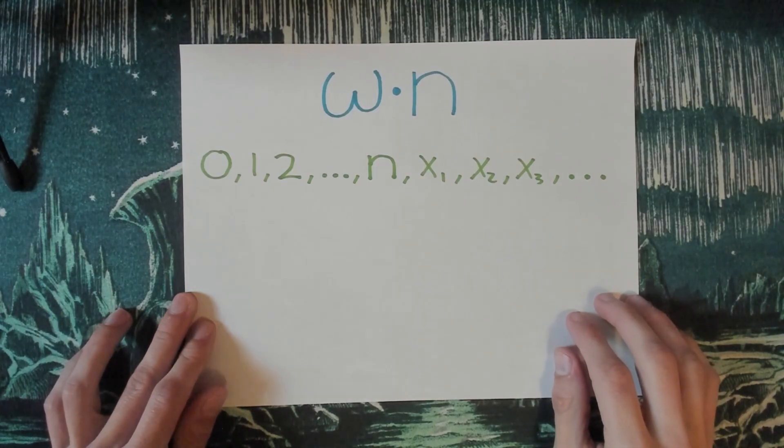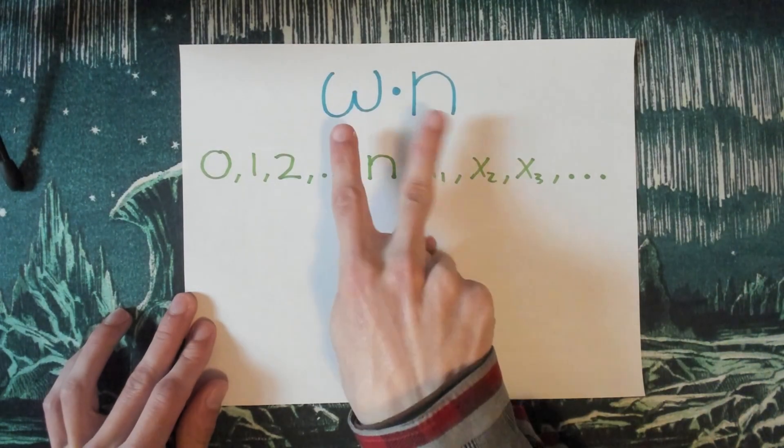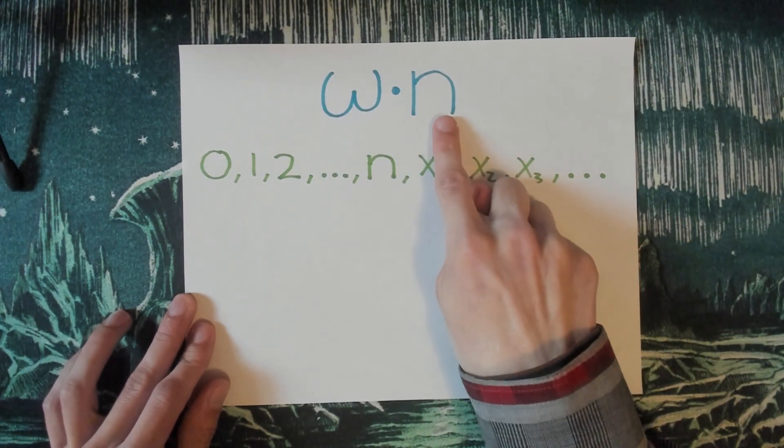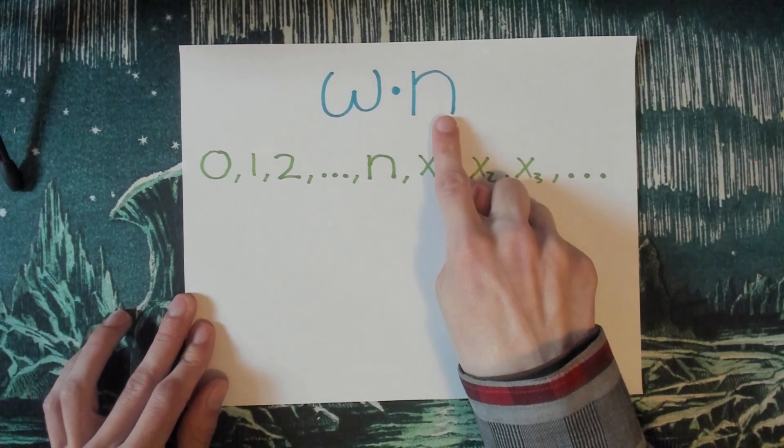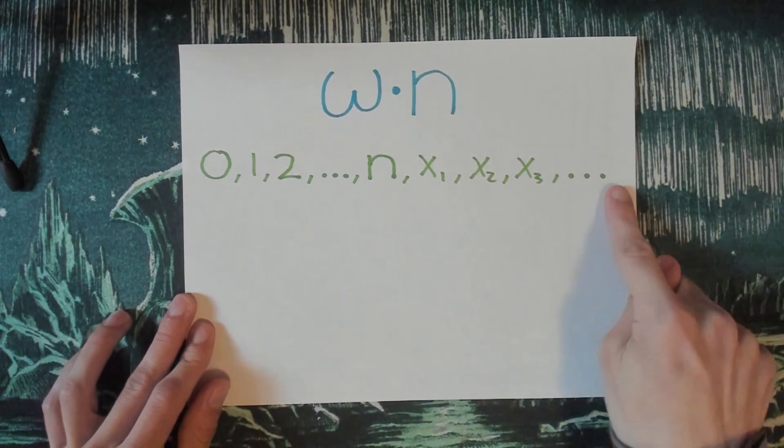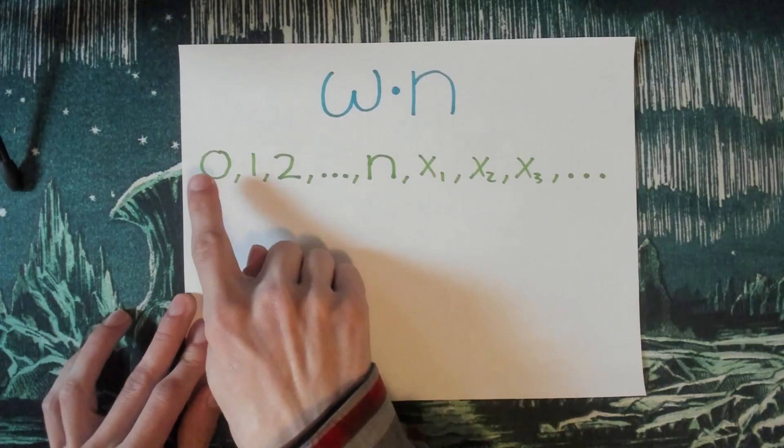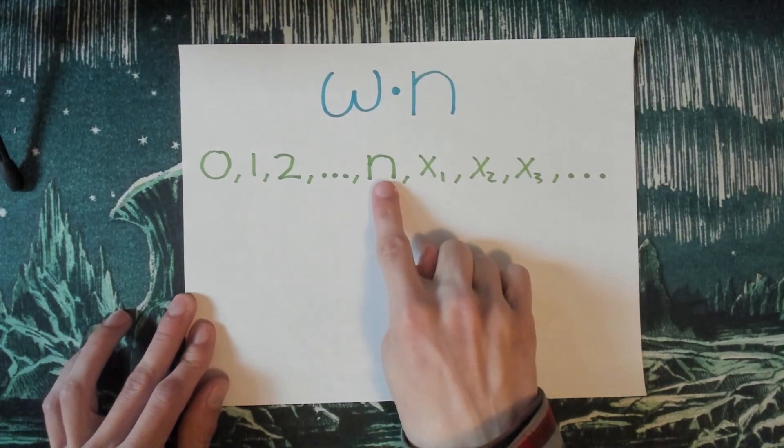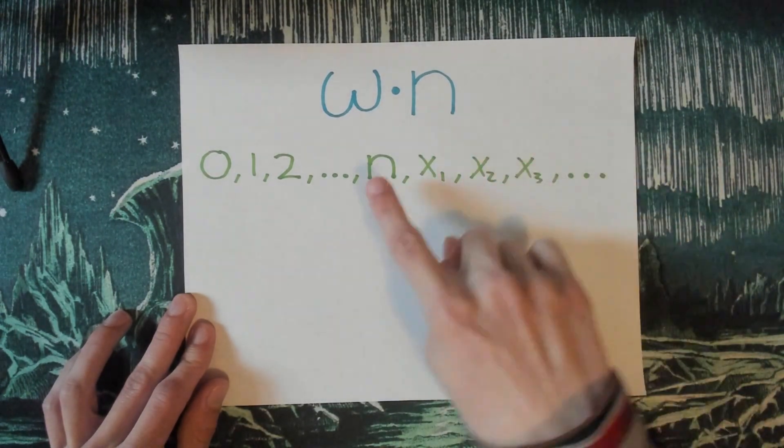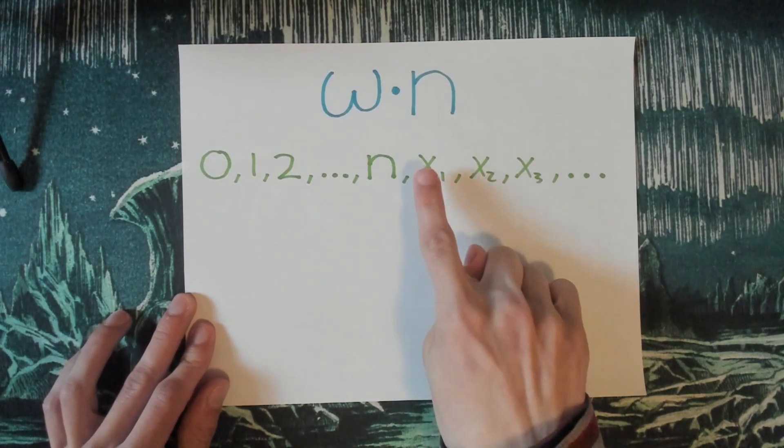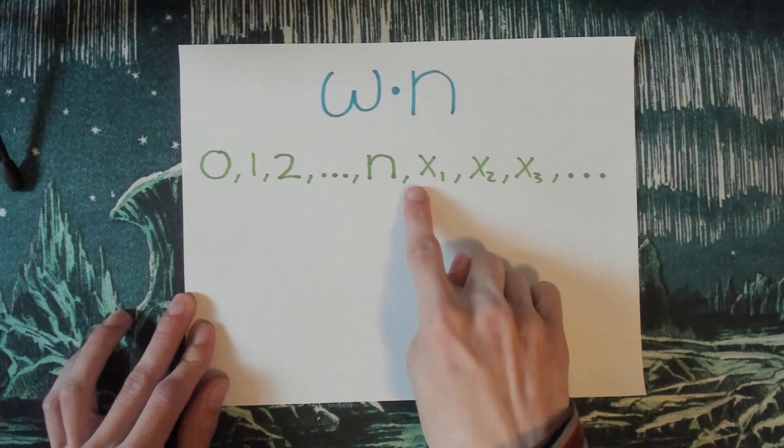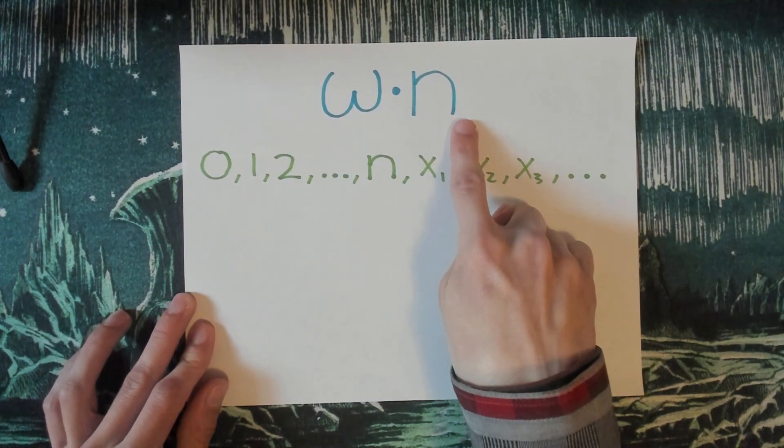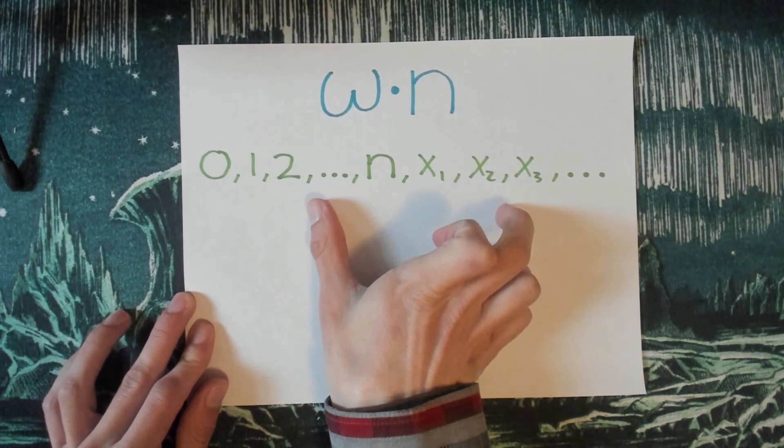So what fundamental sequences are we going to go with? Well, given a limit ordinal of the form omega times n, where n is going to be a positive integer, we're going to associate the following kind of fundamental sequence. So we just count up one by one at first, so 0, 1, 2, all the way up to n, where n is our positive integer. That's how far we count up to. And then after that, for our purposes, it's not going to matter what we pick. We just have to hurry up and converge to omega times n so that this is a proper fundamental sequence.